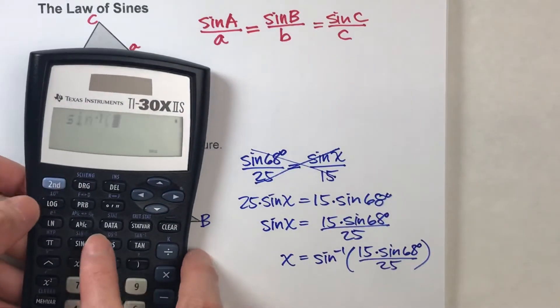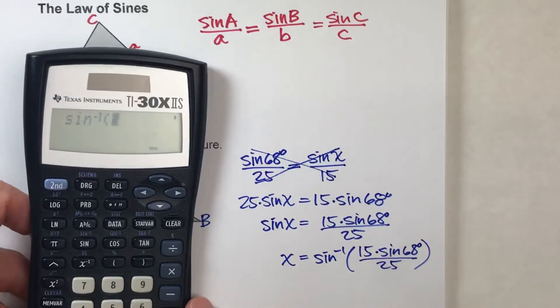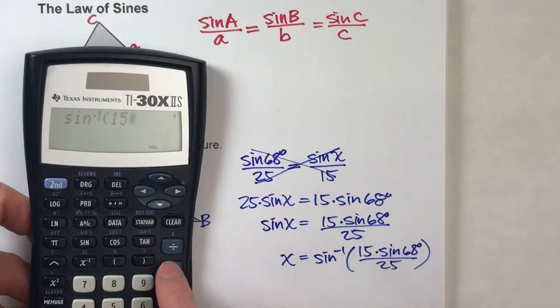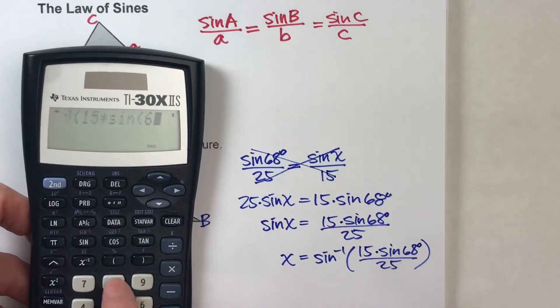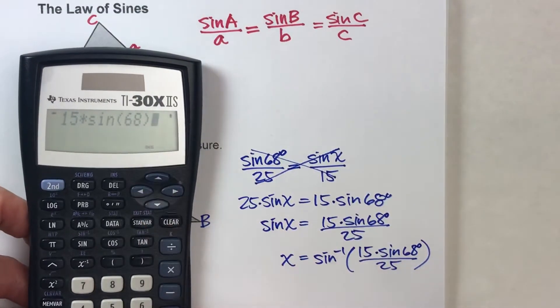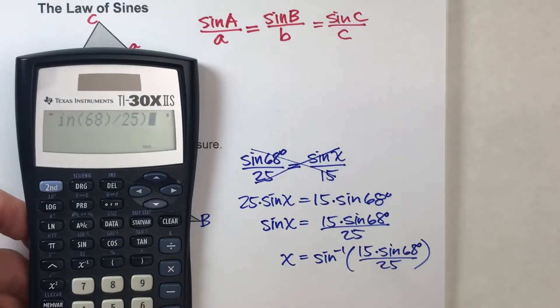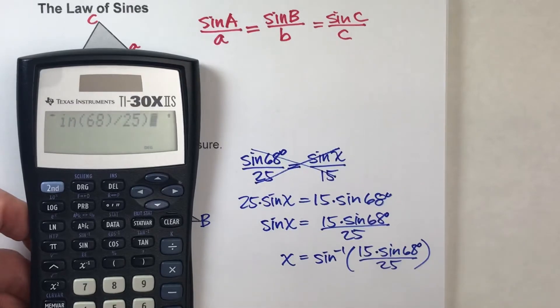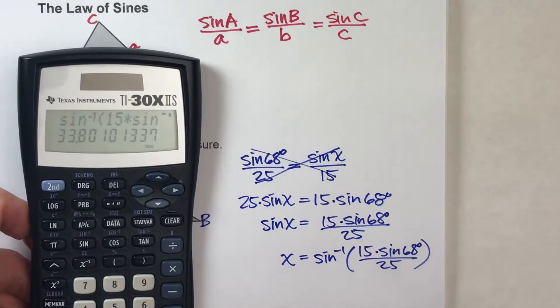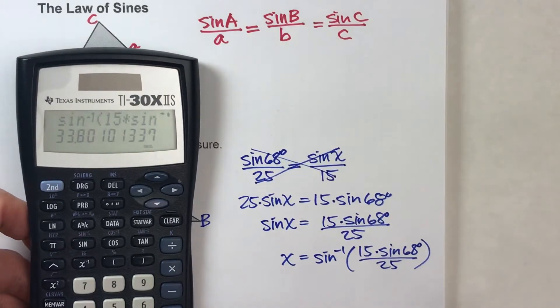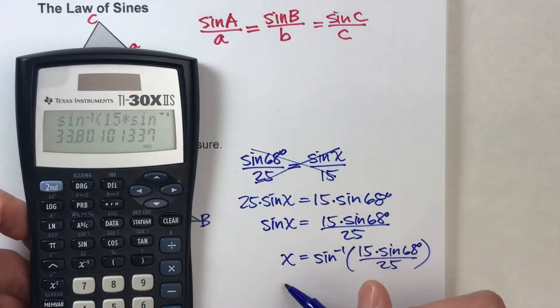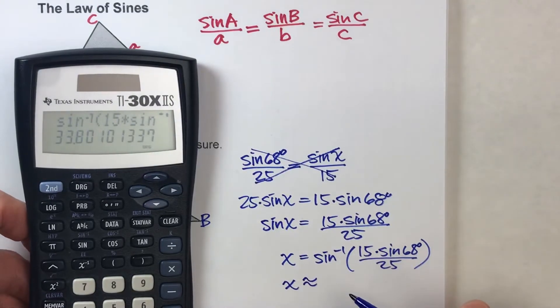Okay. So, the inverse sine of, and you have to be really careful with parentheses here. 15 times the sine of 68 degrees. Close the parentheses off that sine of 68 degrees. Divided by 25, and then I'll close the whole thing off with the parentheses. Boom! Here it is. About 33.80. All right.